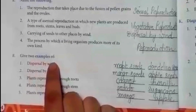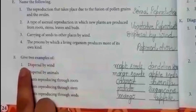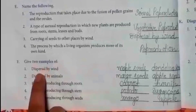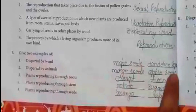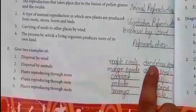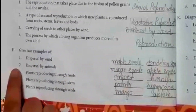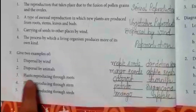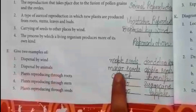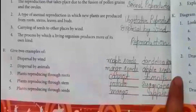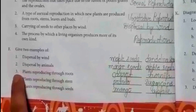F. Give two examples of: first, dispersal by wind — maple seeds and dandelion seeds. Two, dispersal by animals — mango seeds, apple seeds.